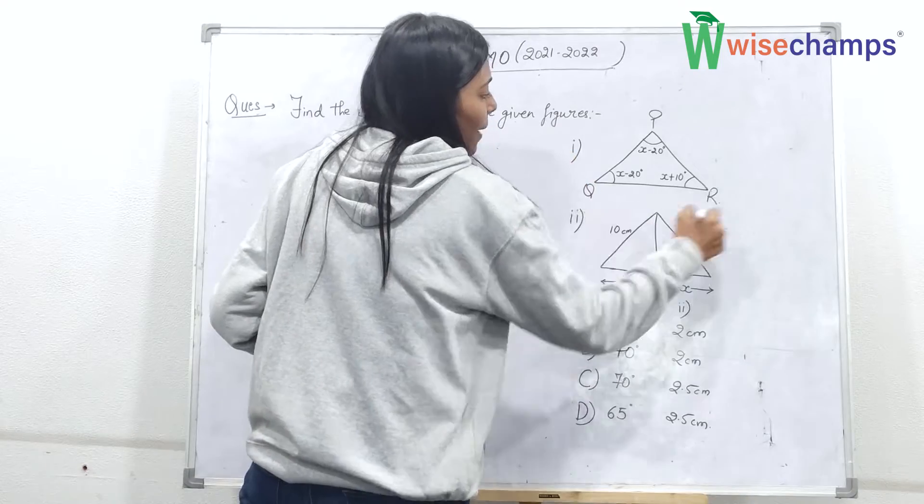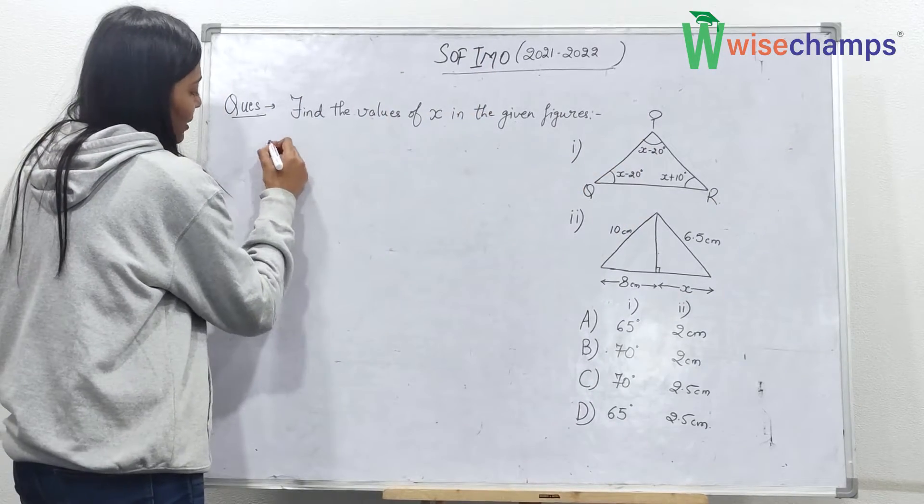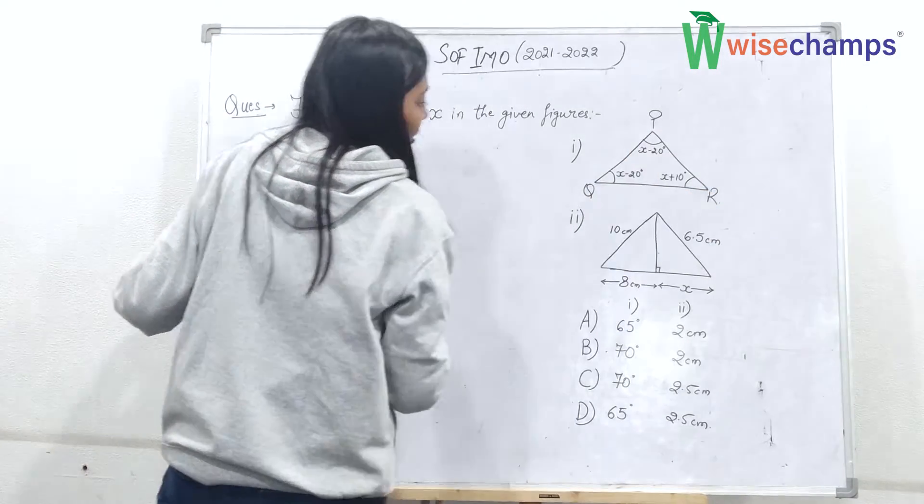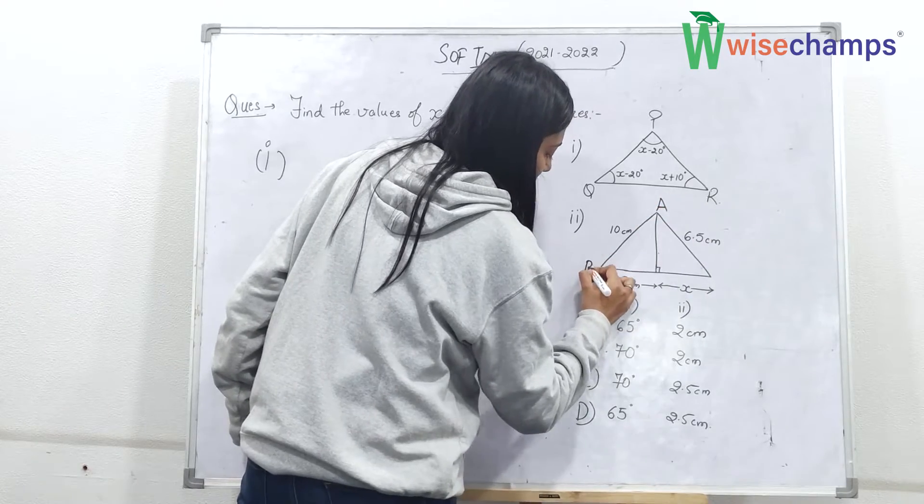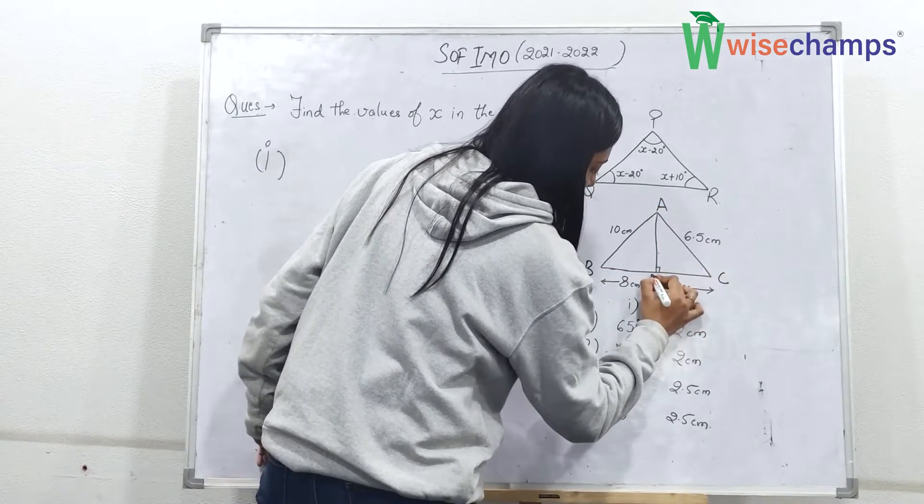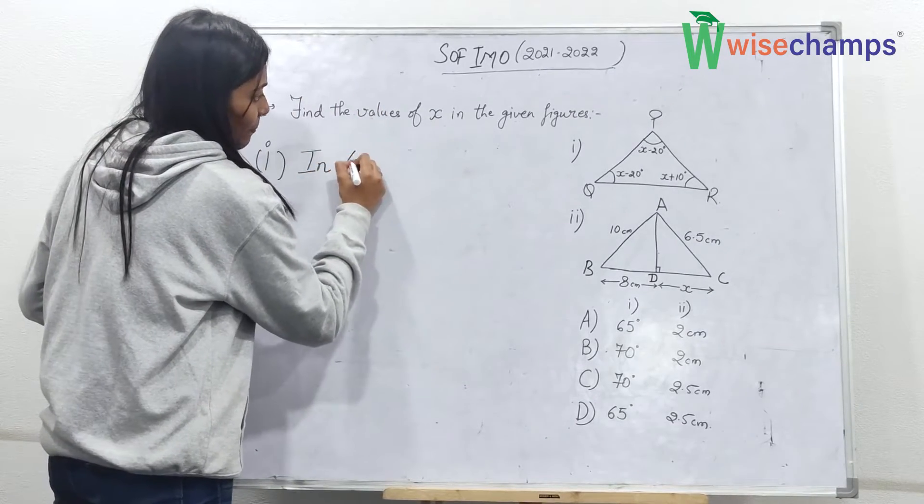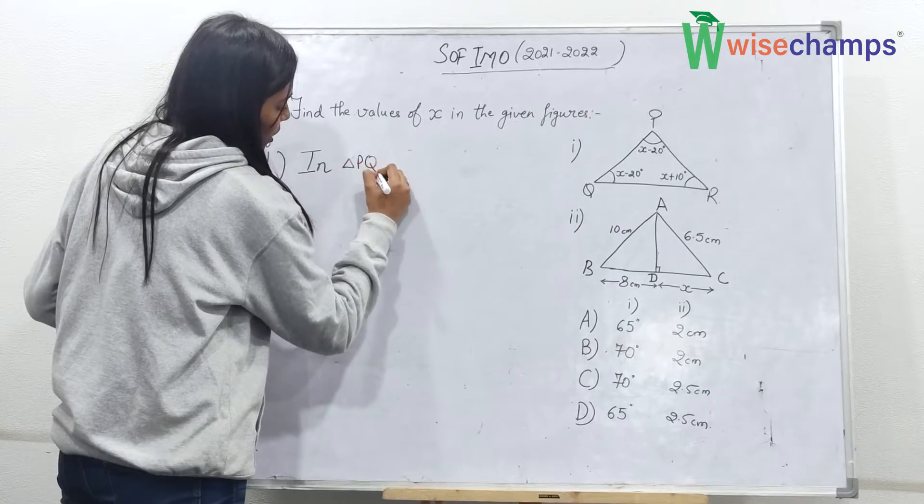Okay, so if we talk about the first figure, first of all we will solve first part, that is PQR triangle, and here let's say this is A, B, and C, and this is D.